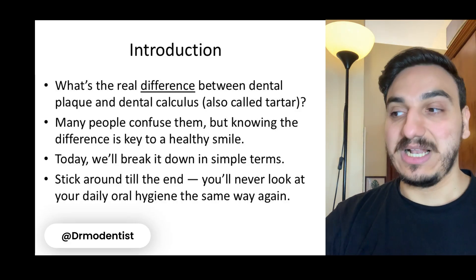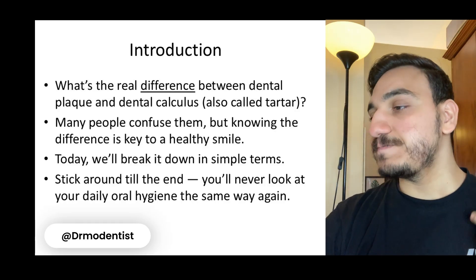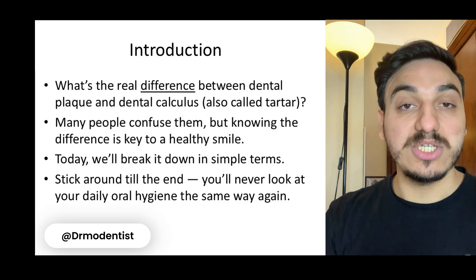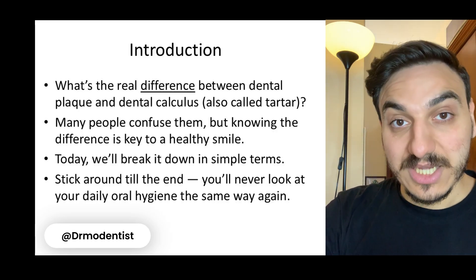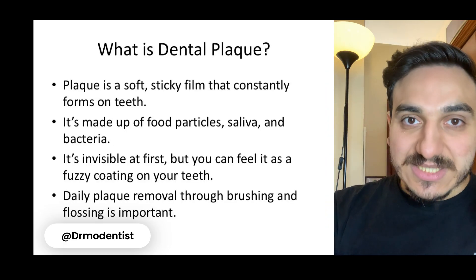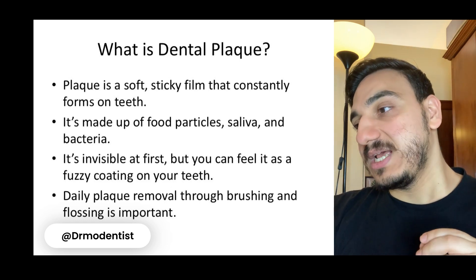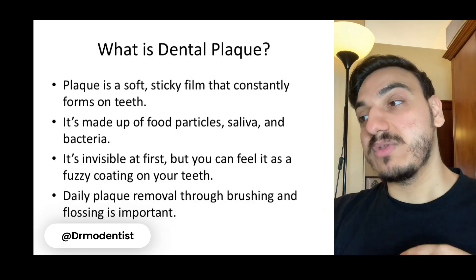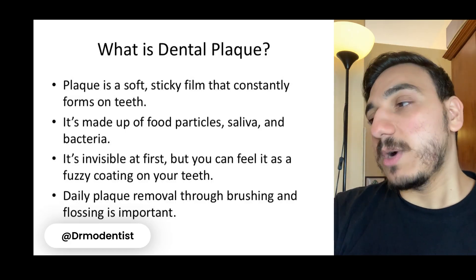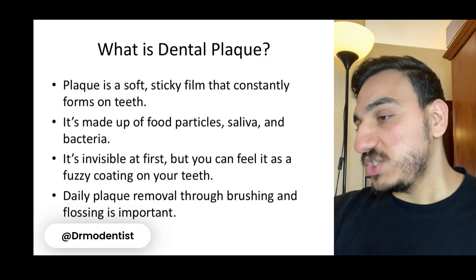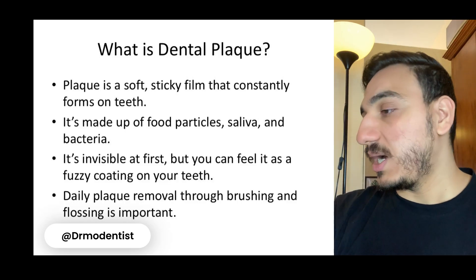Many people confuse dental plaque and dental calculus, but knowing the difference is key to a healthy smile. I'll break it down in simple terms, intended for patients, avoiding complicated language. So what is dental plaque? Dental plaque is a soft, sticky layer that constantly forms on teeth, especially after consuming a meal. It's basically made up of food particles, saliva, and bacteria. It may not be very visible at first, but as it accumulates it becomes more visible.